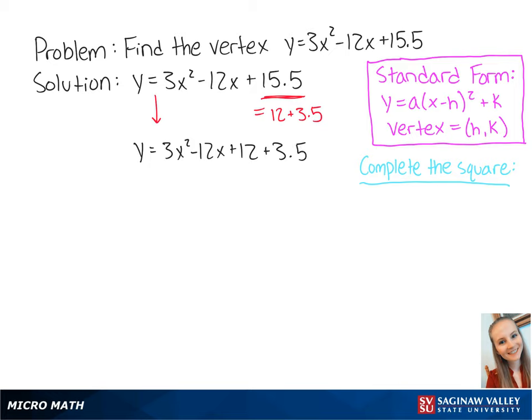Now we can factor out 3 from the first three terms of the equation. So we get y equals 3 times x squared minus 4x plus 4 plus 3.5. To complete the square,